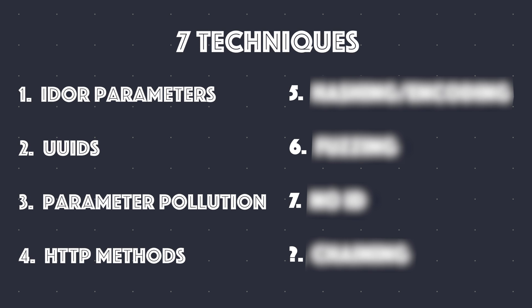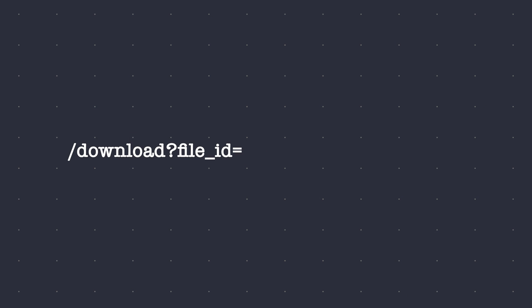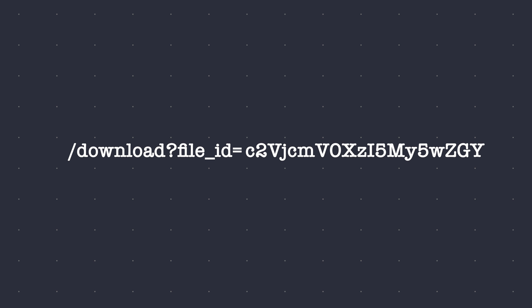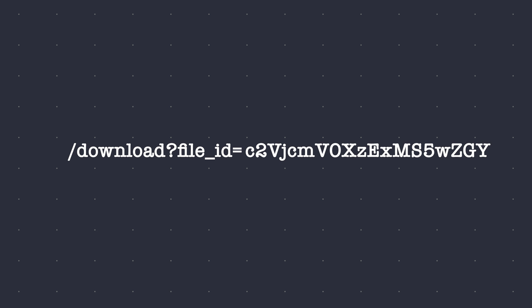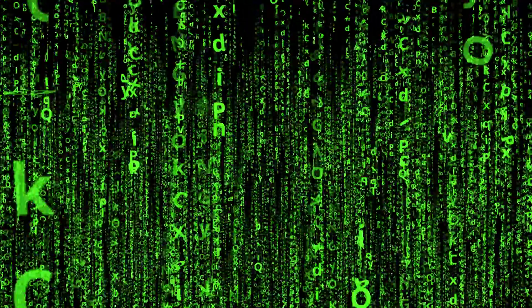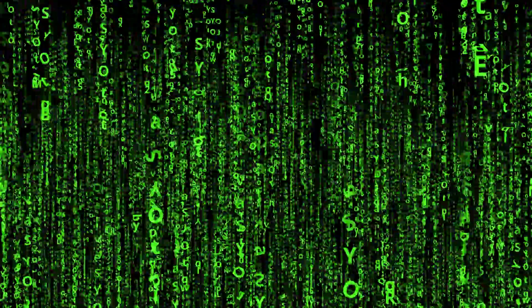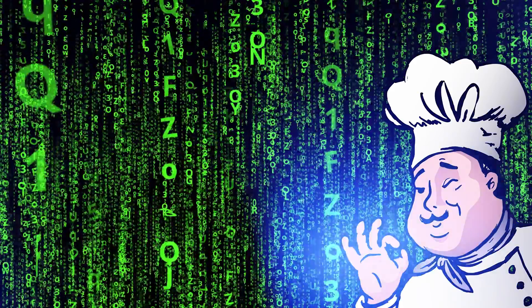Let's continue with the remaining three techniques. Imagine you come across a URL parameter where the file ID string looks like it's encoded — specifically, it could be base64. Decoding it reveals the plaintext. Now we can modify the filename and re-encode it to base64. Substituting the original encoded string with this new one in the URL could allow access to a different file. The parameter might also be encoded with a more sophisticated scheme or hashed, in which case you can try tools like CyberChef or hashes.com.